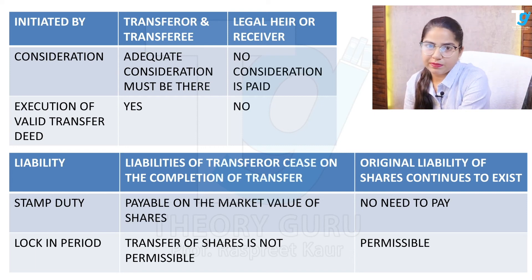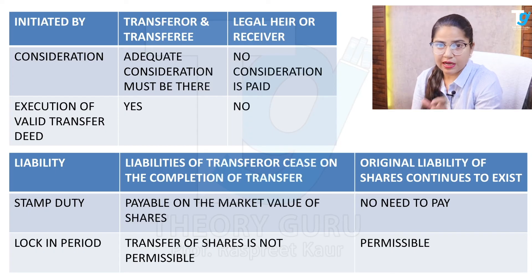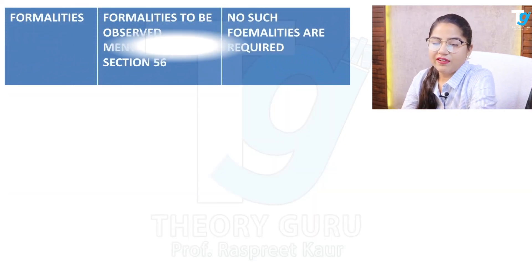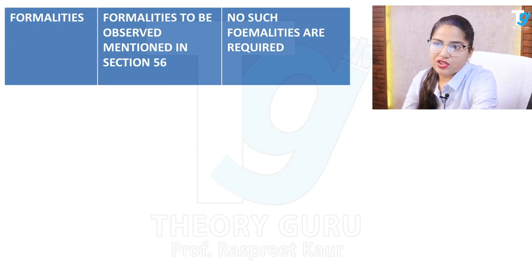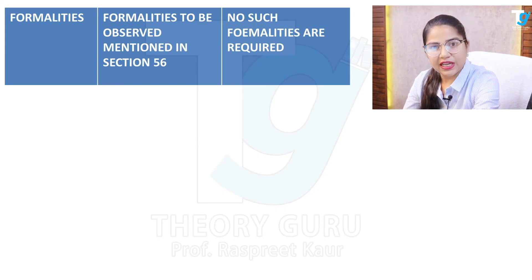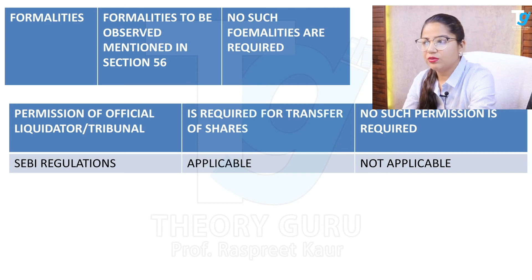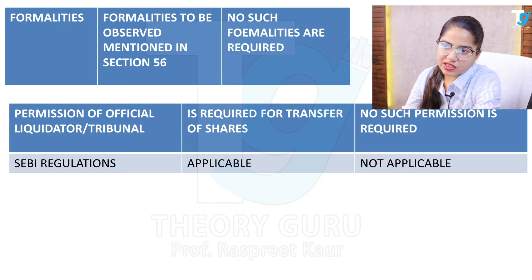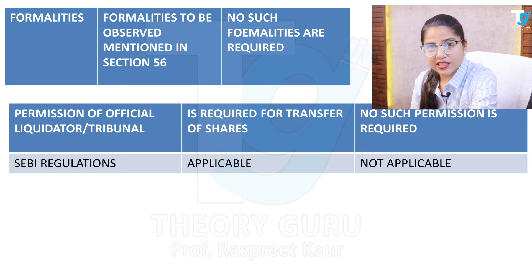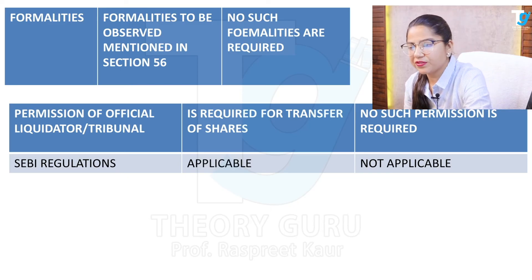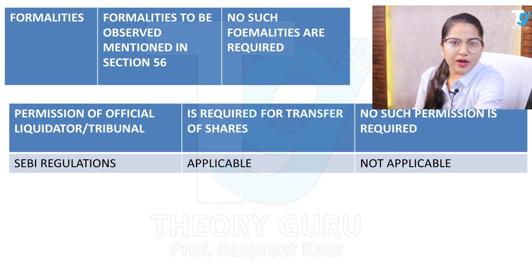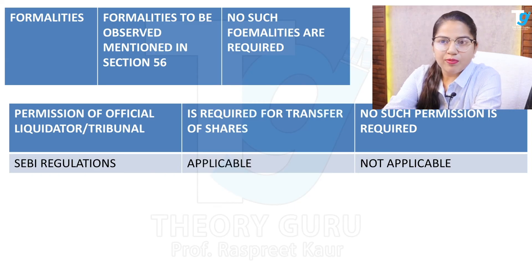However, if during the lock-in period a person in whose name the shares are held dies or becomes insolvent, then transmission of shares is permissible. Regarding formalities: in transfer of shares, the formalities of Section 56 must be fulfilled. But in transmission of shares, no such formalities are required. Also, permission of the official liquidator and tribunal is necessary to transfer shares, but in transmission, such permission is not required. Regarding SEBI regulations: in transfer of shares, all SEBI regulations are applicable and must be followed, but in transmission of shares, they are not applicable.